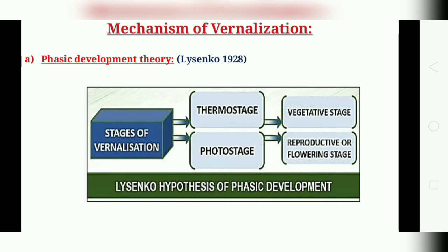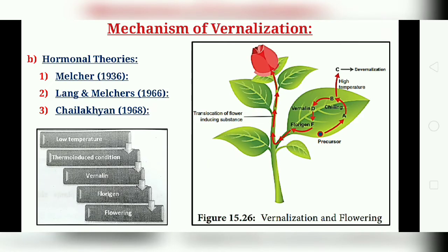After completing the thermo stage, plants proceed to the photo stage, in which continuous light — or photo induction — and medium temperature provide the optimum conditions. After the photo stage comes the third stage, which is necessary for the formation of sex organs, that is the reproduction or flowering stage.